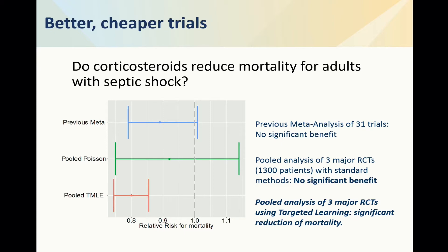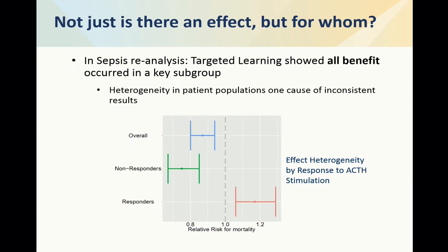But you have to use the right methodology. Something interesting emerges when you analyze the data: there is a baseline medical test — ACTH stimulation — that every patient gets. When patients respond to the stress test, it really helps to take the treatment, the steroid. But if they don't respond to the stress test, it's actually harmful. So there's a group where it's harmful and a group where it's actually beneficial.